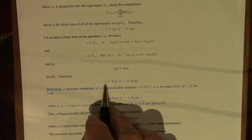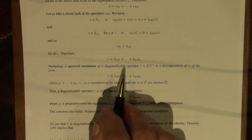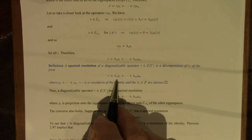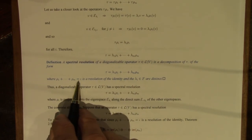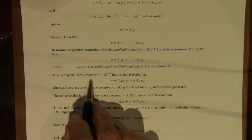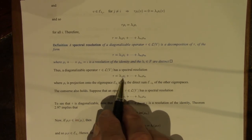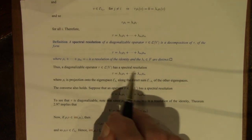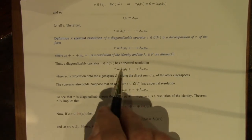So tau is a linear combination of projections onto the eigenspaces, with the eigenvalues as the coefficients. This is a direct generalization of a resolution of the identity. Definition: a spectral resolution of a diagonalizable operator tau is a decomposition of this form where the rho_i's form a resolution of the identity and the lambda_i's are distinct. A diagonalizable operator has a spectral resolution where the projections are onto the eigenspaces along the direct sum of the other eigenspaces.